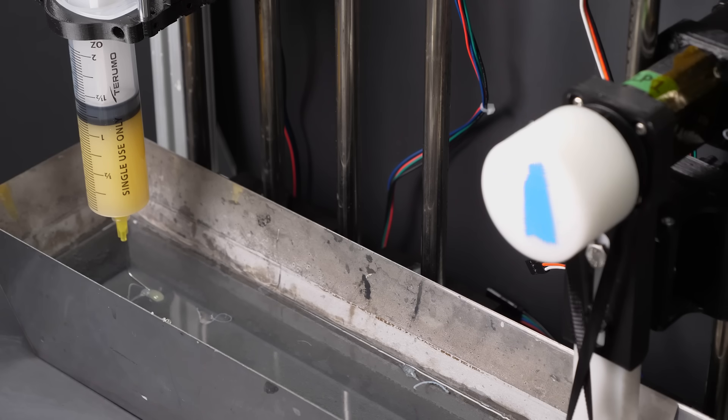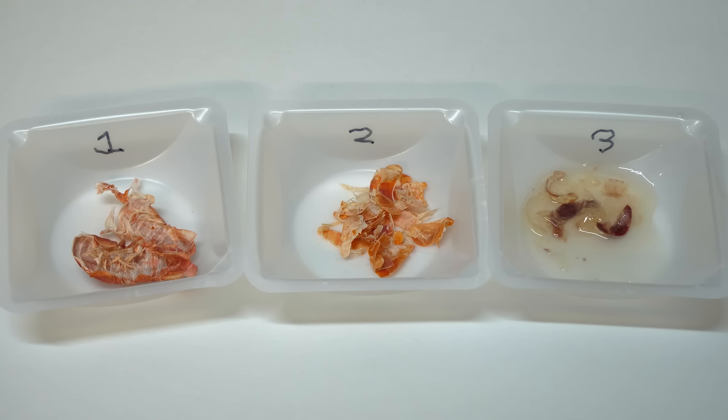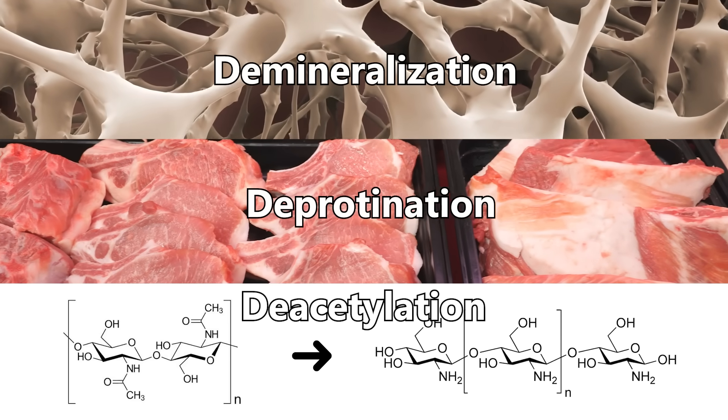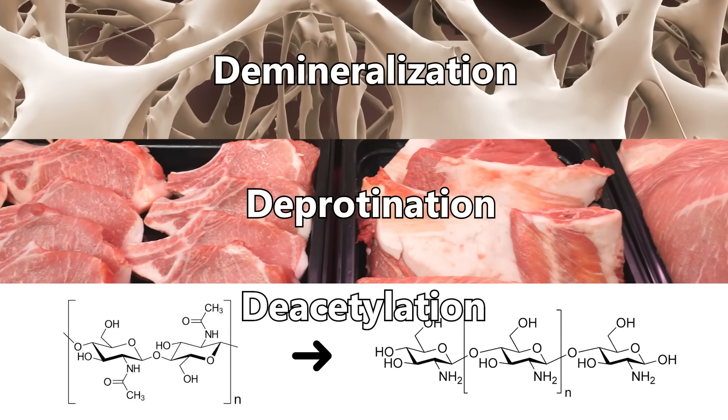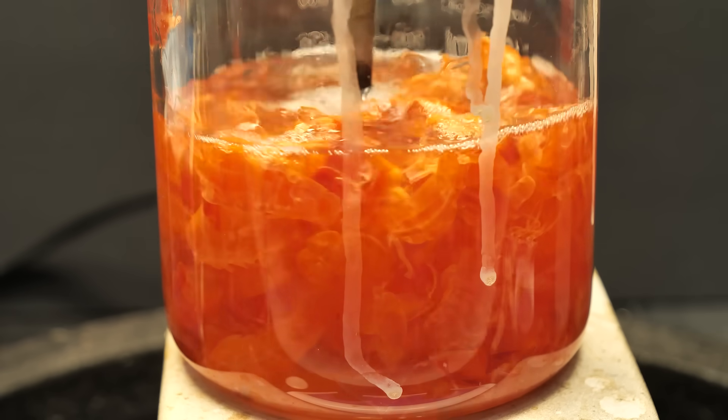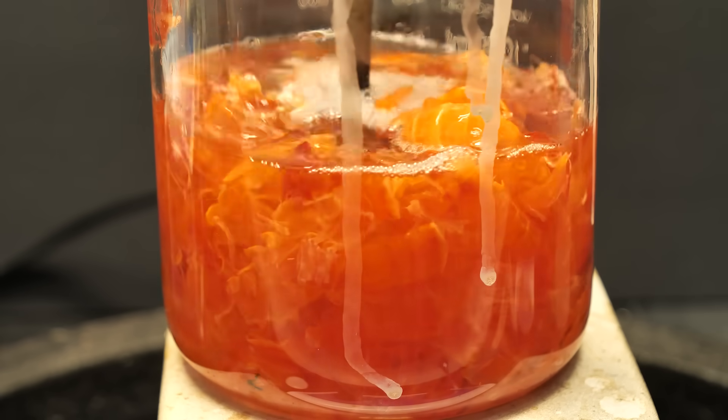Though before we can do that, how do we go from these shrimp shells to usable chitosan we can spin in the first place? The process is actually incredibly simple and is just three core steps. Demineralization, deproteination, and deacetylation. Which is all accomplished by treating the shells with simple solutions of either acid or alkali. Let's go through it step by step.